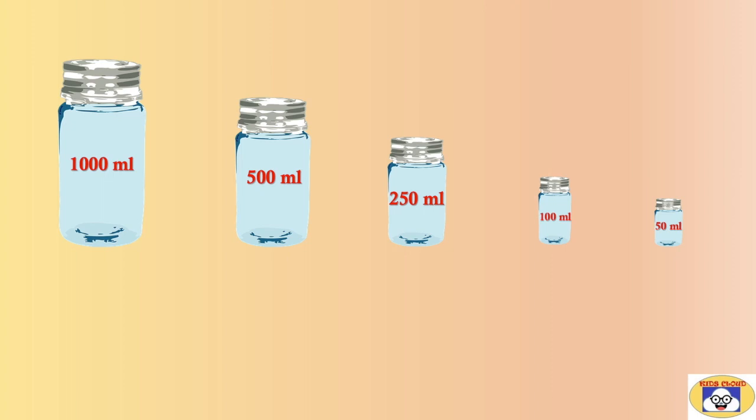The smallest one can hold maximum of 50 ml of water while the largest bottle can hold maximum of 1000 ml of water. Thus we can say the capacity of largest bottle is 1000 ml and the smallest one has a capacity of 50 ml. Others have capacities equal to the respective volumes of water written on the bottles.